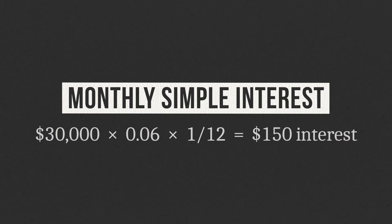The way that interest on a car loan or a student loan typically works in the real world is that it's calculated and paid on a monthly basis. So when you're calculating the amount of interest that's due each month, you need to account for the fact that it's roughly one-twelfth of a year. Using the same numbers, we start with the amount owed — $30,000 — multiply by the interest rate of 6% per year, then multiply by one-twelfth of a year. The result is $150 in interest due that month.